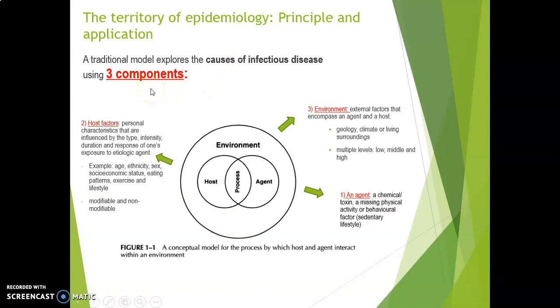These are the traditional epidemiologic threshold model, which consists of three components: host, agent, and environment. You should read what is meant by agent, environment, host, and vectors.